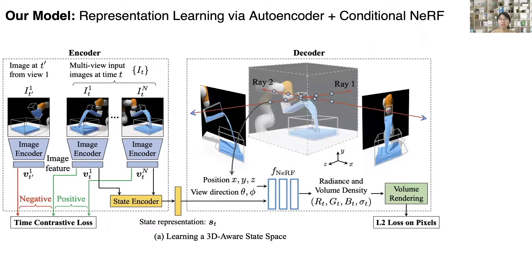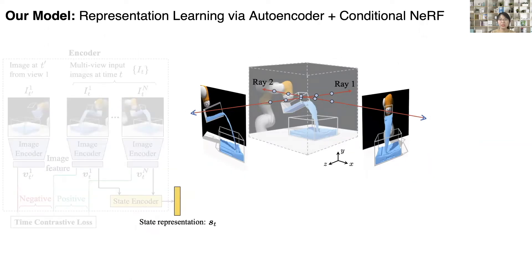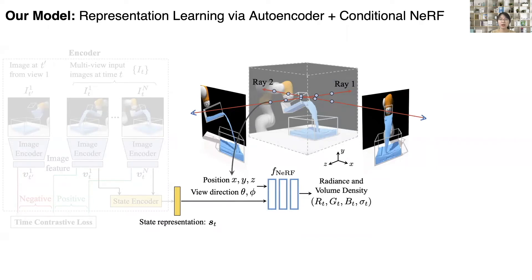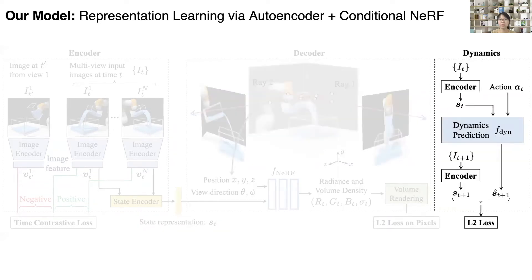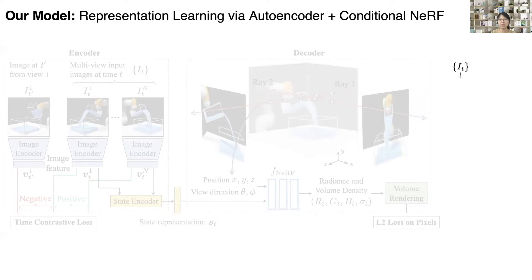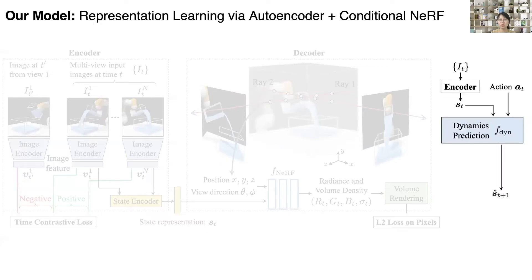We then aggregate the image features from the same time step across different viewpoints using a state encoder to generate a state representation. In the middle part, we modify the NeRF model to render visual observations conditioned on the scene representation and the query viewpoints. The input is the position of each 3D point, the camera view direction, and the state representation; the output is the color and density of that point. We use the same L2 loss from the original NeRF paper to reconstruct images. In the right part, there is a dynamics model that predicts the evolution of the latent representation conditioned on the input action. Given a state representation and action, we predict the next state representation and compute the L2 loss between the predicted and ground truth state representations, backpropagating gradients to update the dynamics model.